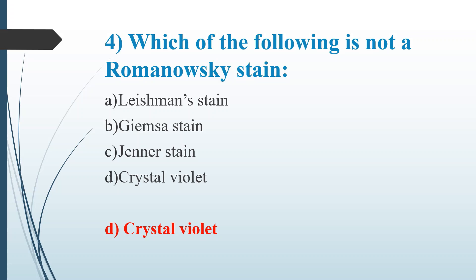May-Grünwald stain is used for air-dried cytological smears. Crystal Violet is an aniline-derived dye — it is the primary stain used in Gram staining, not a Romanowski stain.